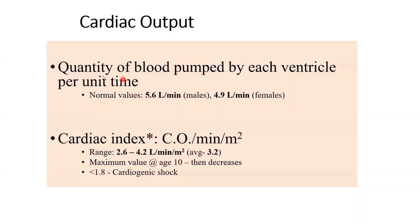Cardiac output is basically the quantity of blood pumped by each ventricle per unit time, which is conventionally per minute. In males it's around 5.6 — you can remember five liters per minute generally speaking — and 4.9 liters per minute in females on average, though this does vary within the normal range. A very common and silly mistake students make when asked to define cardiac output is mentioning the quantity of blood pumped by the left ventricle into the aorta.